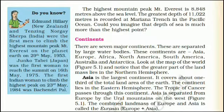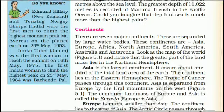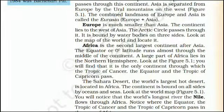Asia is separated from Europe by the Ural Mountains on the west. The combined land mass of Europe and Asia is called Eurasia. Europe is much smaller than Asia. The continent lies to the west of Asia, and the Arctic Circle passes through it. It is bound by water bodies on three sides.